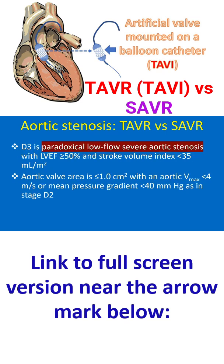D3 is paradoxical low flow severe aortic stenosis, with LVEF more than or equal to 50% and stroke volume index less than 35 ml per meter squared. Aortic valve area is less than or equal to 1 square centimeter with aortic Vmax less than 4 meters per second or mean pressure gradient less than 40 mmHg, as in stage D2.